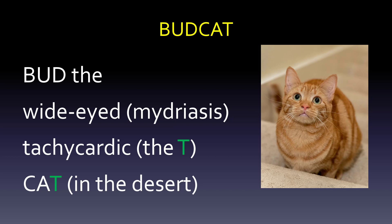So BUD and CAT are all going to stand for something: blurry vision, urinary retention, dry mouth, constipation, anhydrosis — which is no sweating — and tachycardia. We have to use 'tachycardic' to remind us that the T is for tachycardia and the B is from blurry vision because of dry eyes.